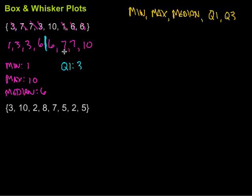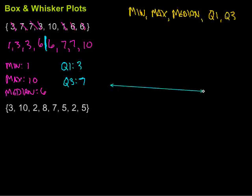Then I do the same thing on the upper half of my data and find the middle of that — that's going to be my third quartile. Seven and seven, so the middle is just at seven. Now I have my five pieces of data that I can use to draw my box and whisker plot.